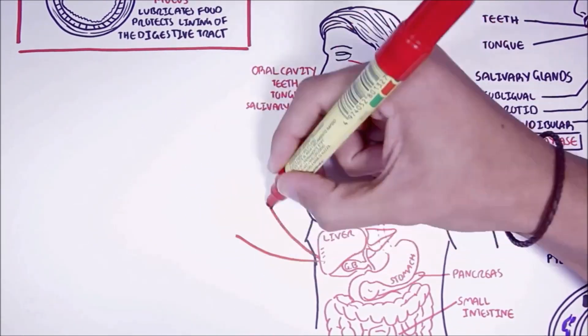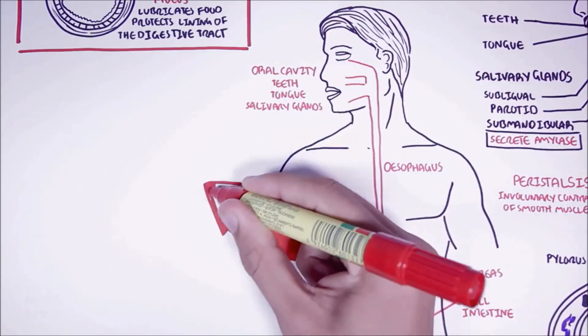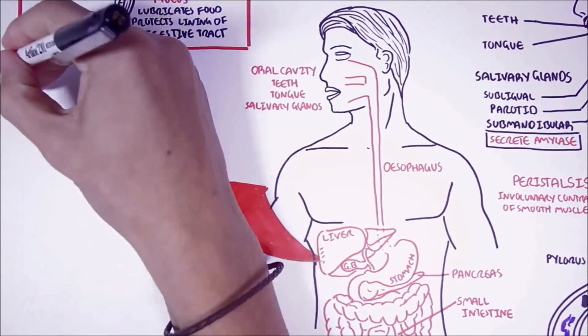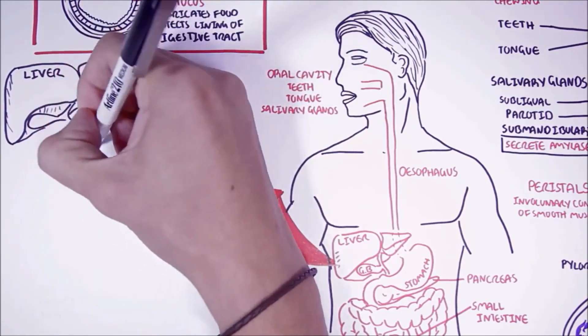Let us learn a bit more about these accessory organs and their role in digestion. Here we are zooming into the liver and the gallbladder.